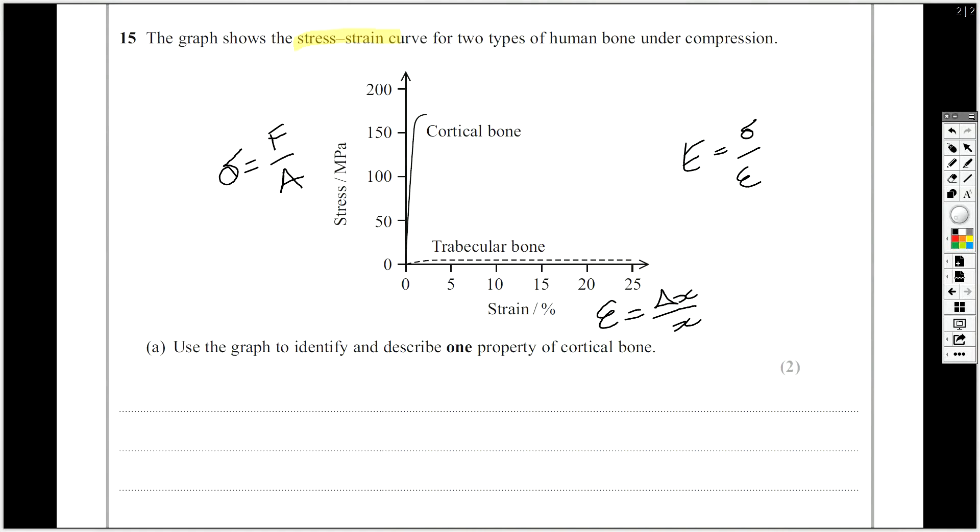I suggest that you just have a little look at this, and they're asking you to identify and describe one property of cortical bones. That's where the two marks are. Firstly, say what the property is. Well, cortical bone is brittle, you can see that...